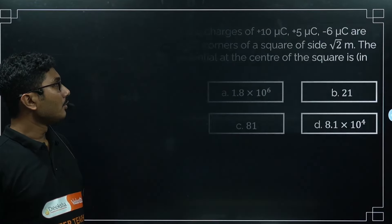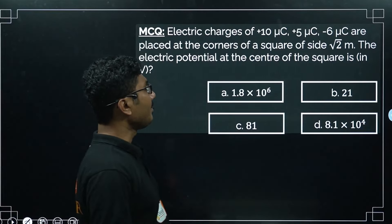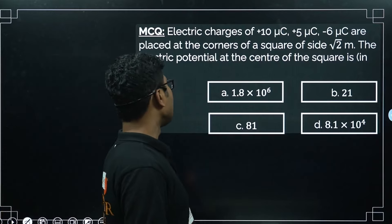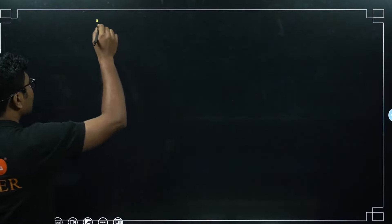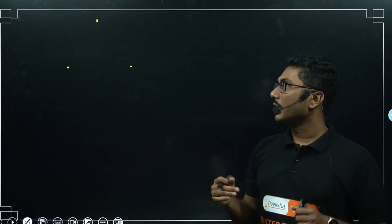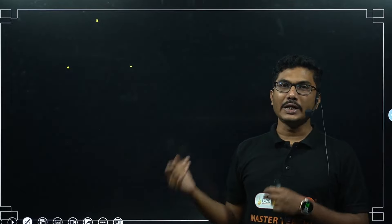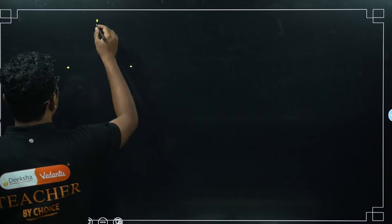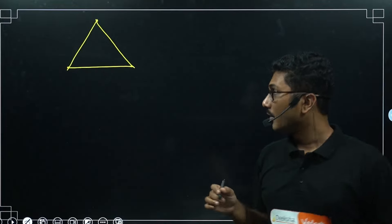The second homework question: electric charges of +10 μC, +5 μC, and −6 μC are placed at the corners of a square of side √2 meters. Find the electric potential at the center of the square. Let's draw the square and find the geometry. The diagonal of a square of side A is A√2. Here the side is √2 m, so the diagonal length is √2 × √2 = 2 meters.